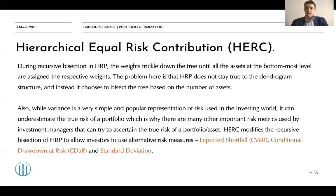Also, while variance is a very simple and popular representation of risk used in the investment world, it can underestimate the true risk of a portfolio. That's why HERC modifies the recursive bisection of HRP to allow investors to use alternative risk measures such as expected shortfall, conditional drawdown at risk, standard deviation, and equal weighting.